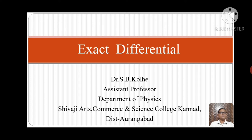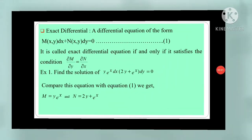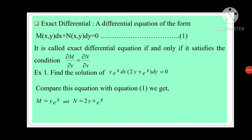Today we will discuss about exact differential. What is exact differential? A differential equation of the form M, function of x and y, dx plus N, function of x and y, dy is equal to zero — equation first. This equation first is called an exact differential equation if and only if it satisfies the condition del M by del y is equal to del N by del x.